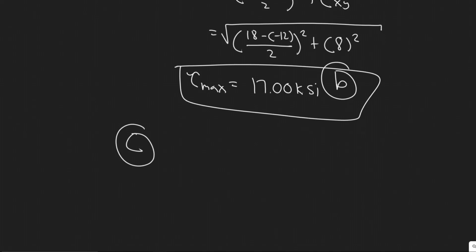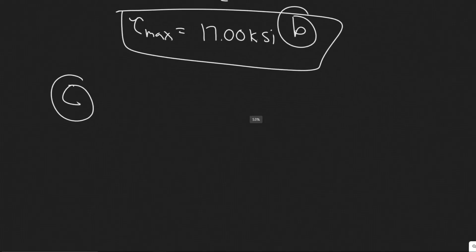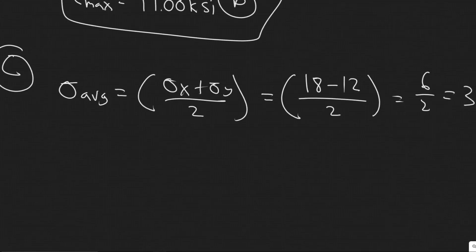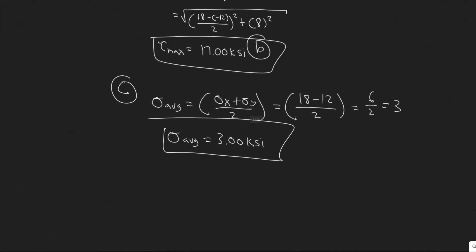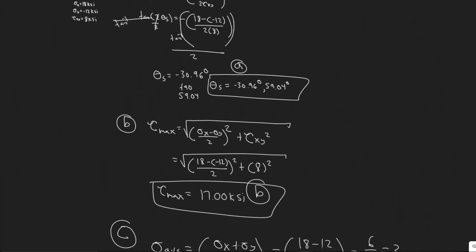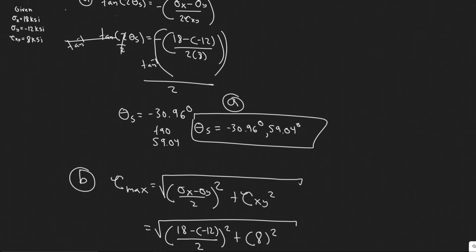And then what they're looking for in C is the corresponding normal stress. Basically, they're just asking for sigma average. The formula for this is sigma x plus sigma y over 2. This is really easy. It's just 18 minus 12 over 2, which is 6 over 2, which equals 3. So sigma average, which is what they want, the corresponding normal stress, is 3.00 ksi. We've been working with ksi the whole time. So your answer for C is 3 ksi, that's the corresponding normal stress.